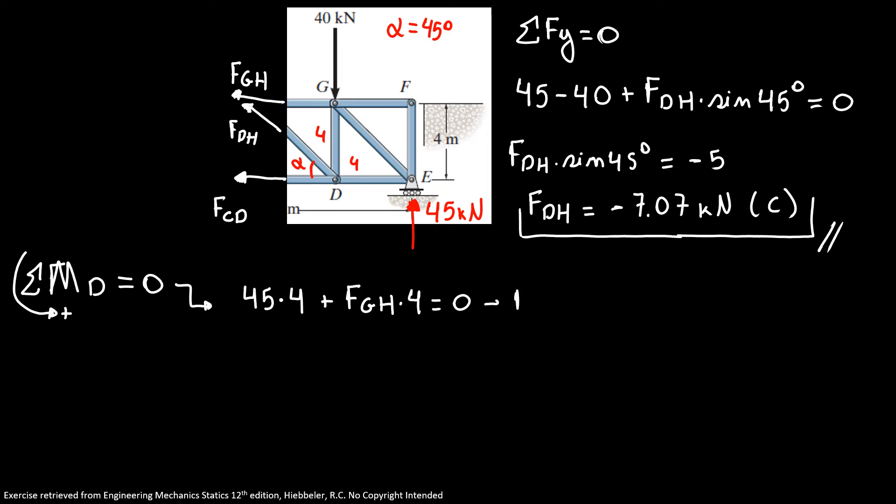So we have our FGH is equal to minus 45 kilonewtons in compression.